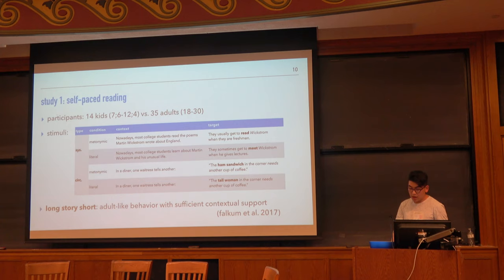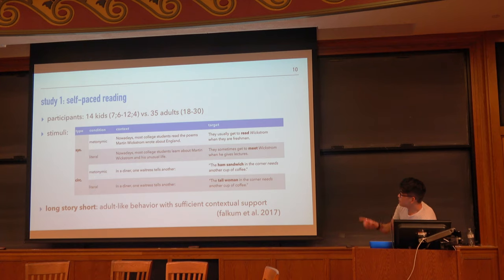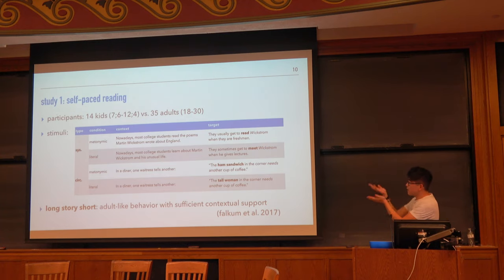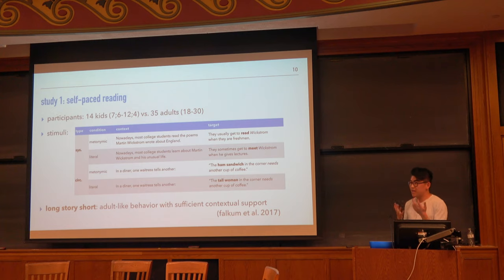Long story short, we find adult-like behavior in children given sufficient contextual support. They show the same processing pattern. The reading times are much slower for the kids — you basically see the same shape of the reading times but much higher overall. The relevant comparison is between the metonymic and literal conditions. This parallels findings from Falkham et al. that kids can do metonymy — it's not that they can't do it. The hard part is getting that contextual support. When you give them the context, it works fine.